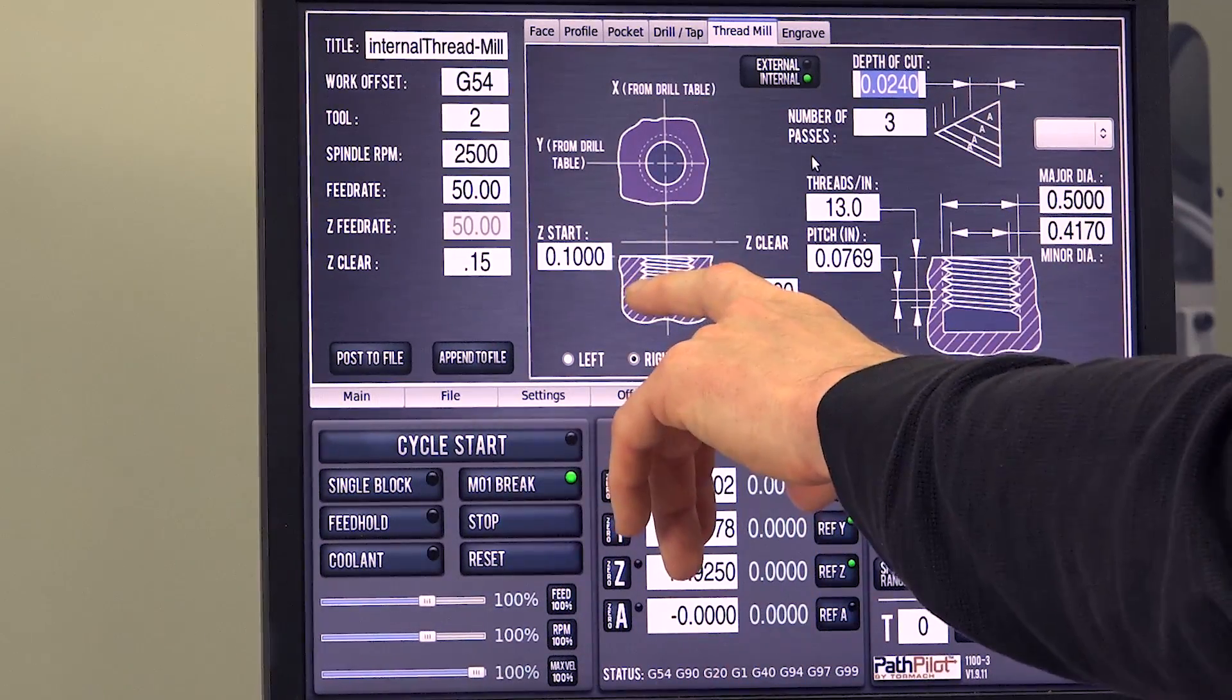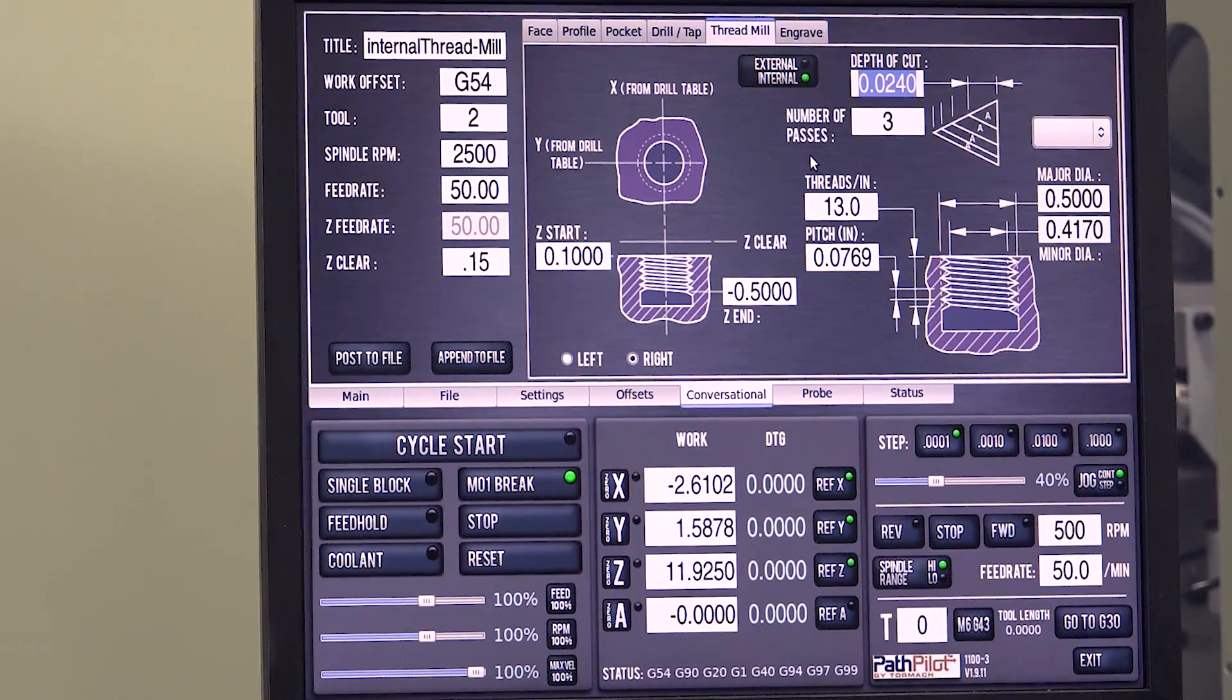The graphics kind of tell you what's going on. Z start, Z clear, Z end. Those should be relatively straightforward.